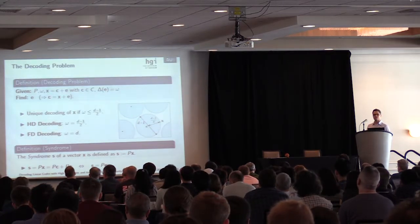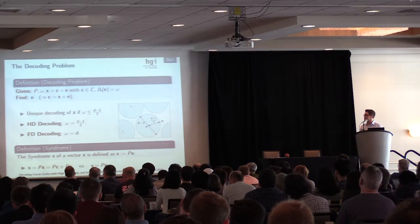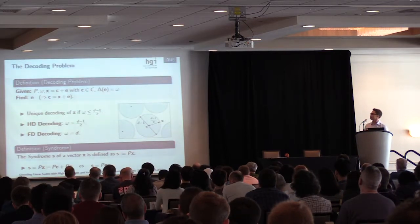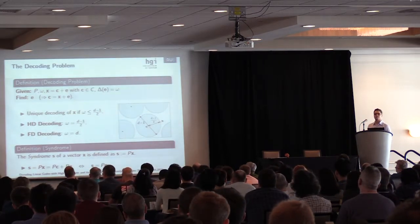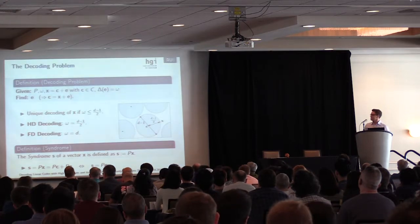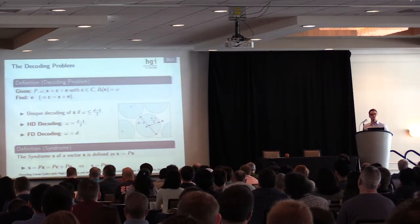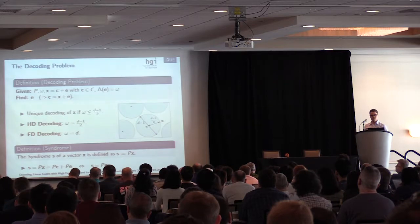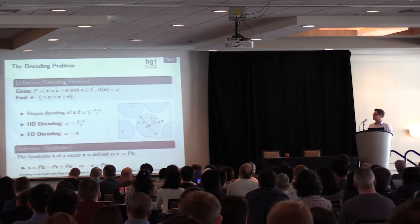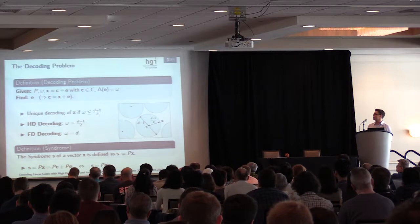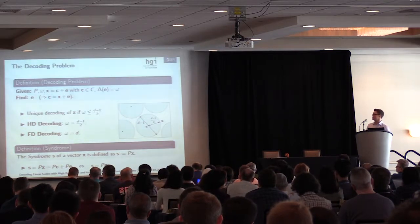This already defines the first important case, namely the half-distance decoding case. The second important case is the full-distance decoding, where the error rate omega is equal to D.